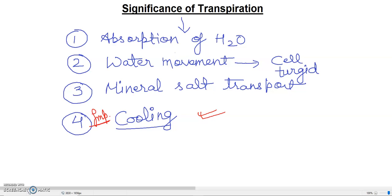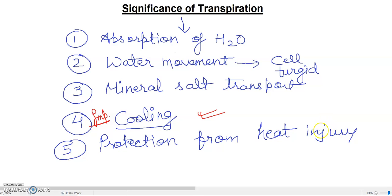And the last point, students, is that the significance of transpiration will be protection from heat injury. This will also protect from heat injury. As you can see, there are some plants like cactus. What do they do to retain their water? The xerophytic plants will reduce the rate of transpiration, and this will help protect from high temperature and strong sunlight.